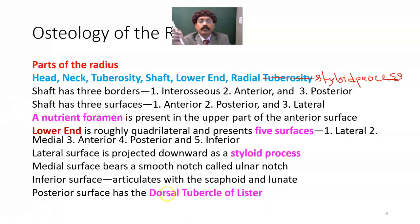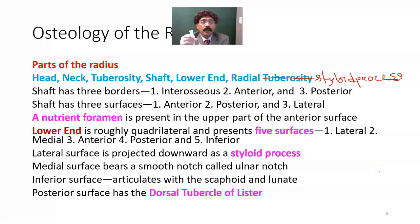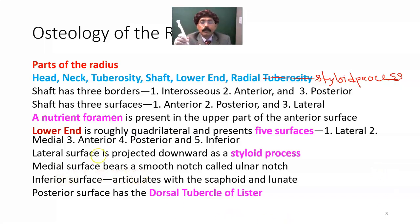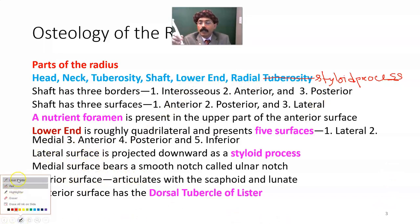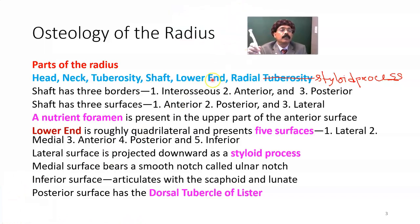The shaft has three surfaces as just discussed. The nutrient foramen is present in the upper part of the anterior surface and is directed towards the head of the radius. The lower part of the radius is the growing end. The nutrient foramen is usually a branch of the anterior interosseous artery, which is a branch of the common interosseous artery, which is a branch of the ulnar artery, which is a branch of the brachial artery.